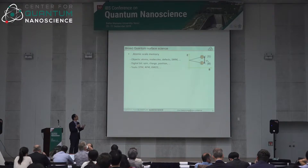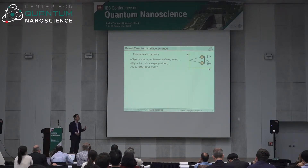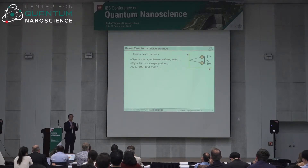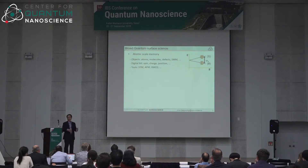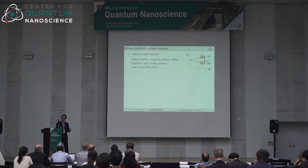In terms of broad quantumness in surface science, this field has been marching toward making atomic-scale memory devices. You want to make a digital bit into the smallest possible object — it can be atoms, molecules, defects, or single molecular magnets. You can utilize spin, charge, or position of defects as the digital bit, using tools like STM, AFM, or XMCD to characterize spin properties on surfaces.